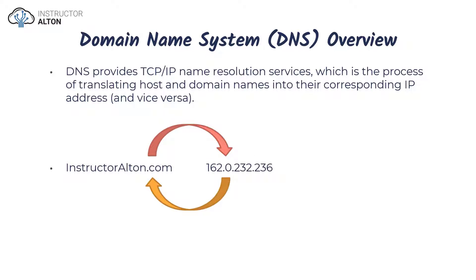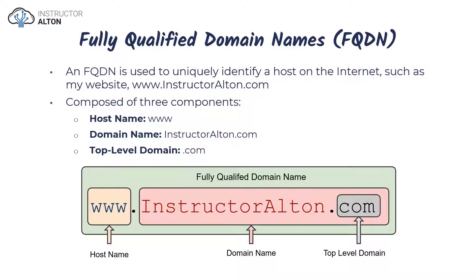Let's now take a look at what a fully qualified domain name is. When we look at a domain name, it's composed of three different parts: a host name, a domain name, and a top-level domain. When you say www.google.com, that is the fully qualified domain name. For my website www.instructoralton.com, the top-level domain is .com, but I could also register .net or .org — there are multiple different types of top-level domains.